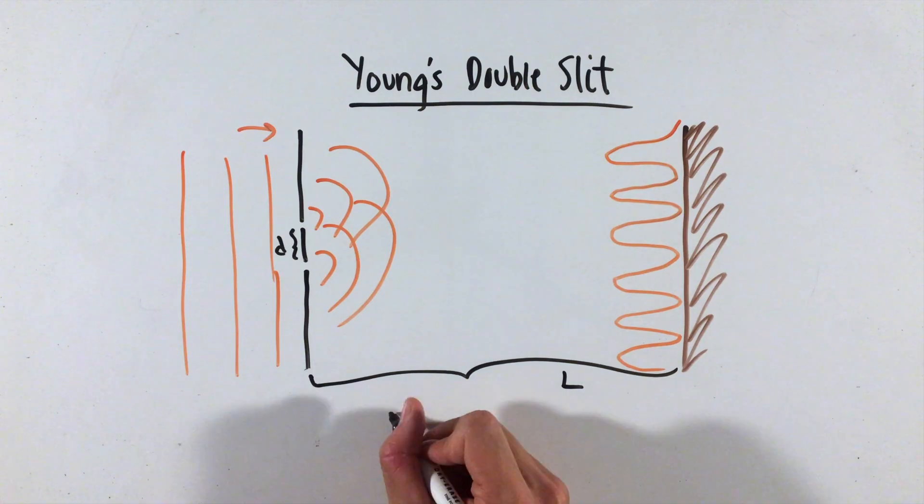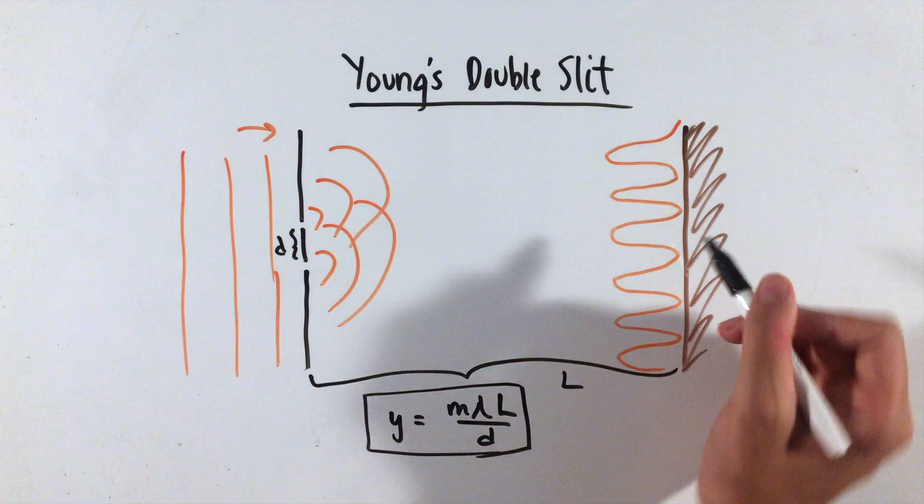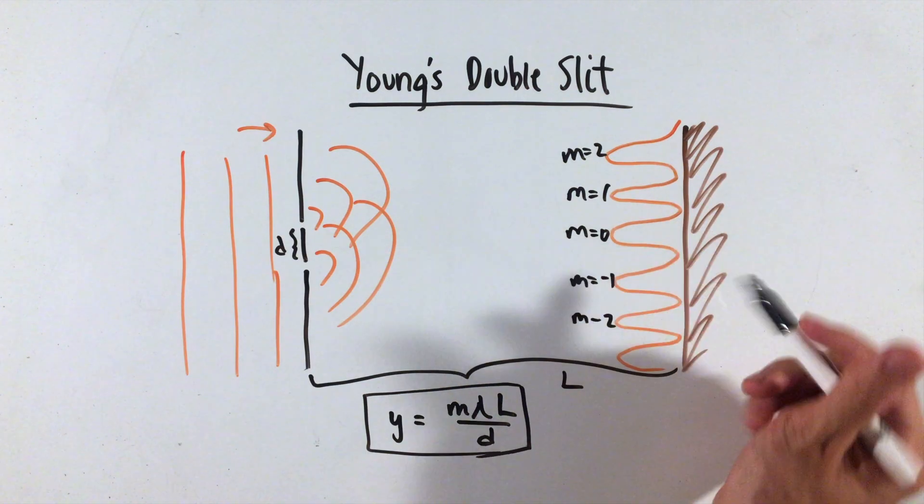Each peak's height from the center, y, is given by this equation, where m is an integer, and lambda is the wavelength of light.